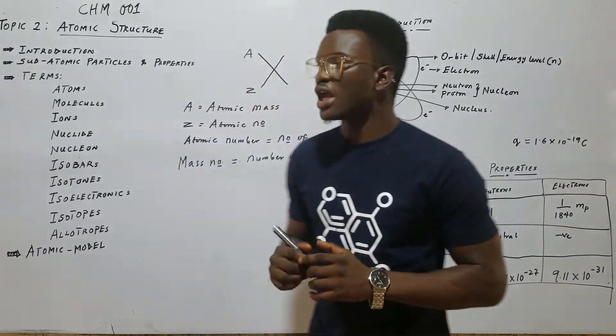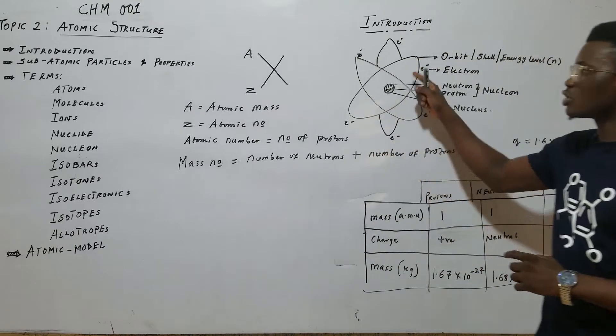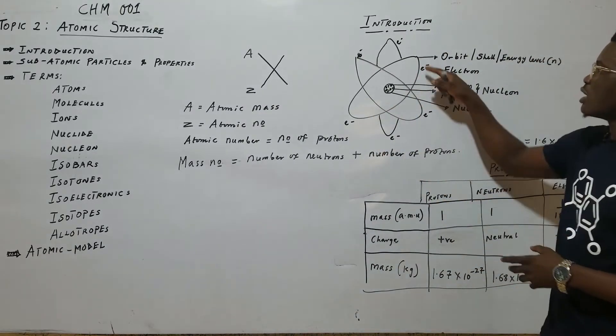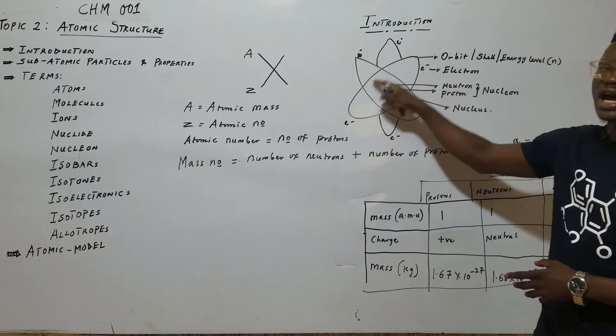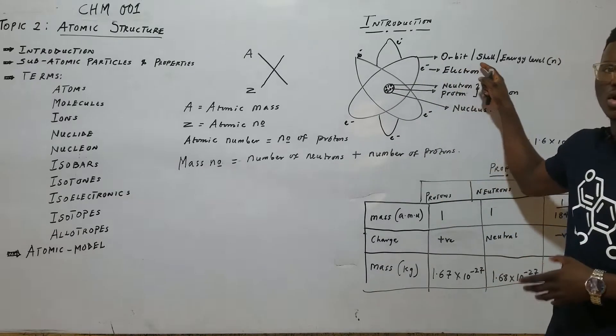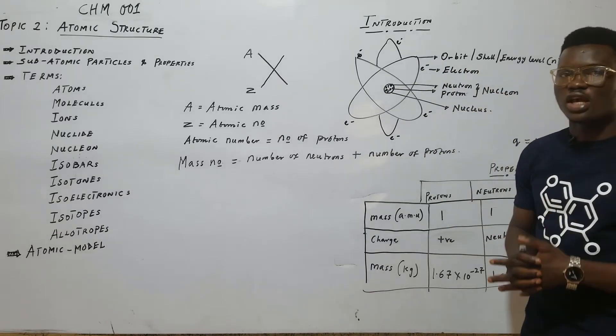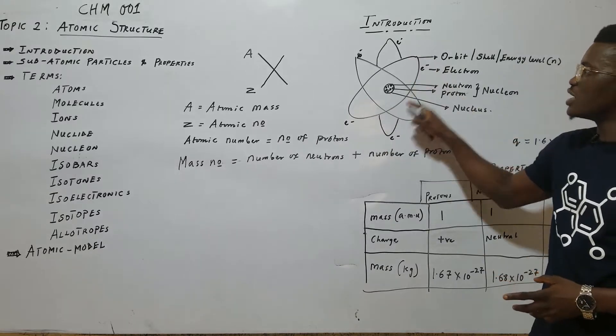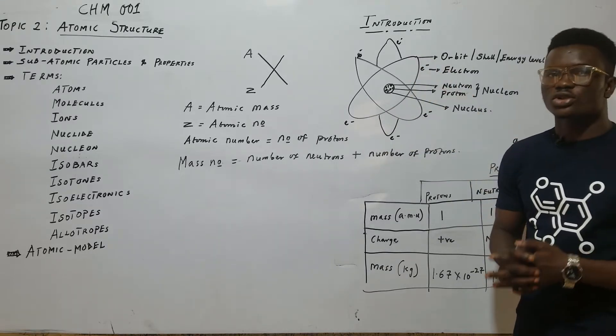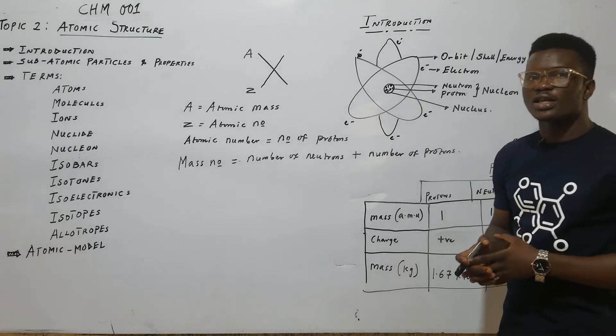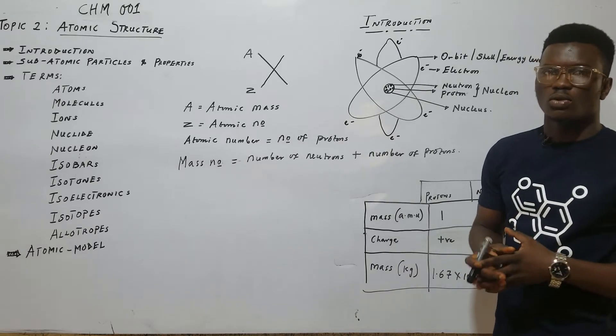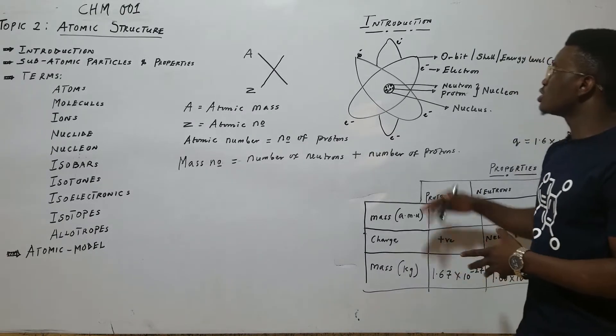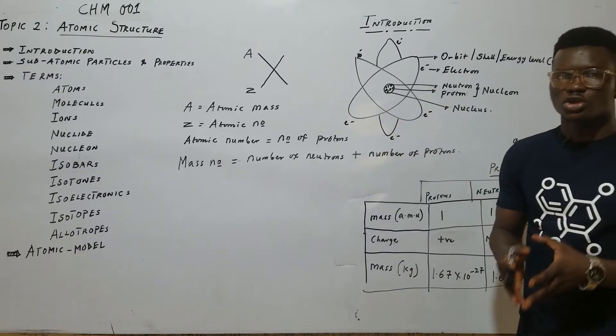On the structure, we have this as the structure of the atom. The outside that we have as a circle is called the orbit or shell or the energy level. On this energy level is where you find the electron. We are still going to find out that there is nothing like orbit. We will find out what we call orbital later. So, this orbit houses the electron.